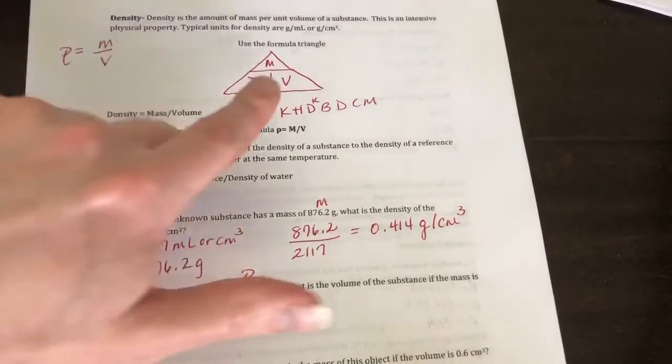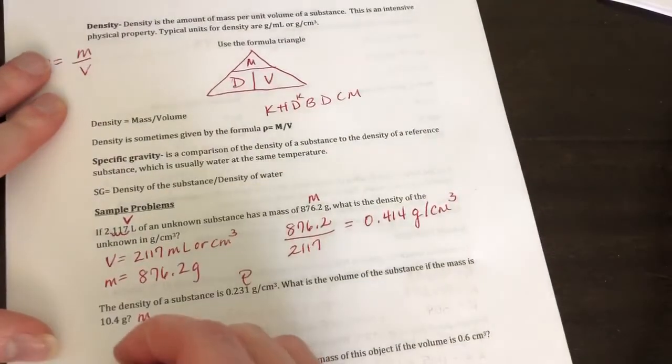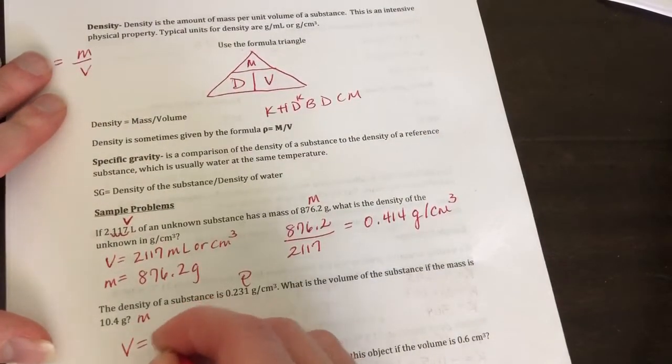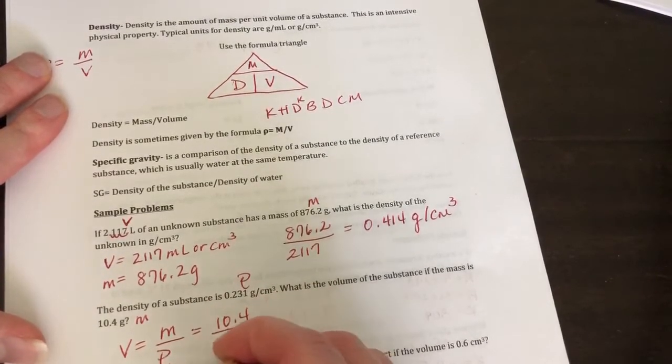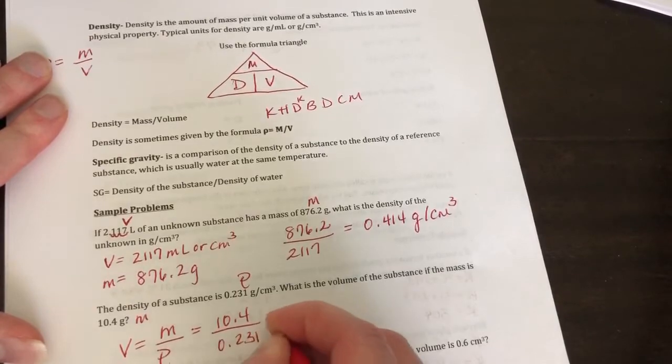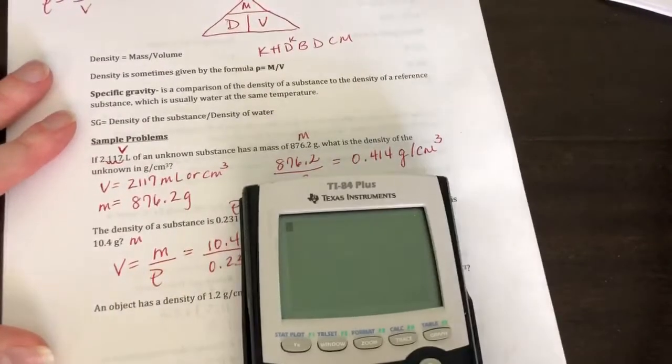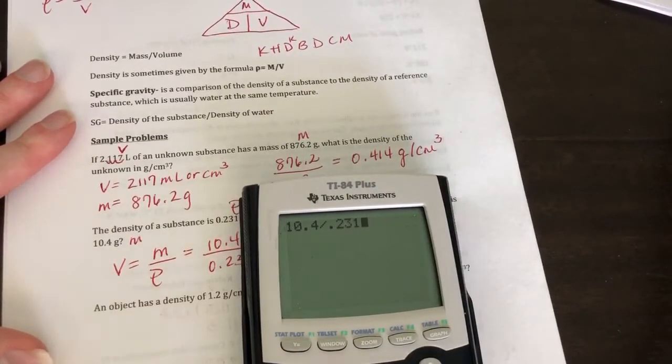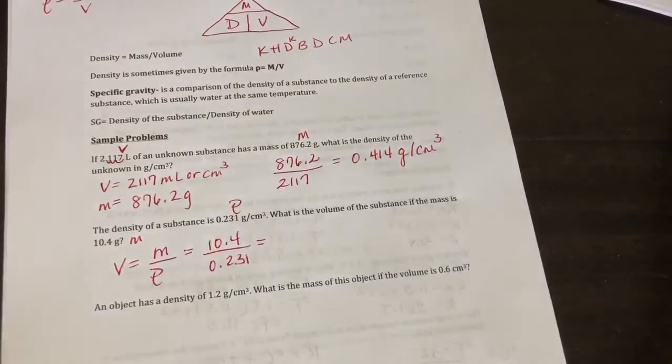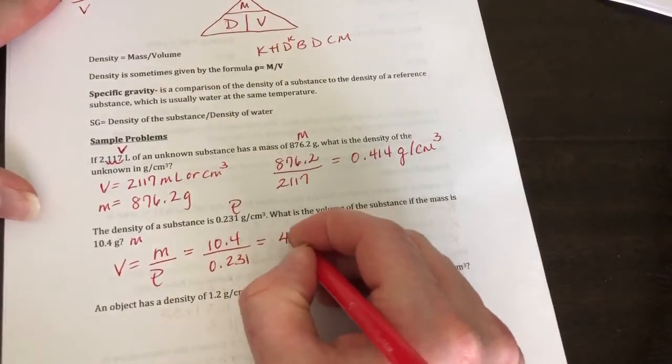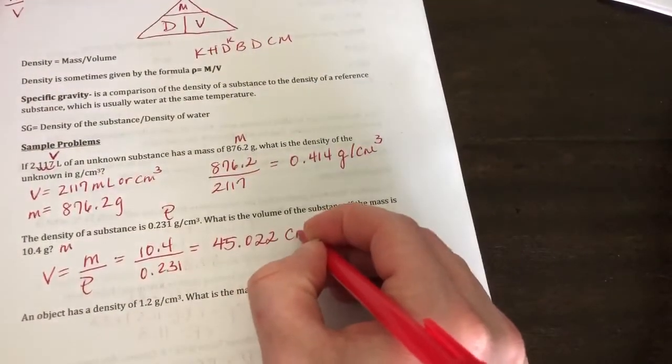So if I'm looking for volume, I'm going to cover up the V in the triangle. So I do mass divided by density. Okay, so we're going to do 10.4 divided by 0.231. So 10.4 divided by 0.231. You get 45.022. Go at least two decimal places.